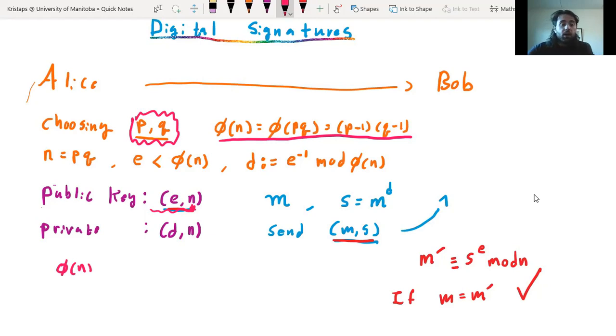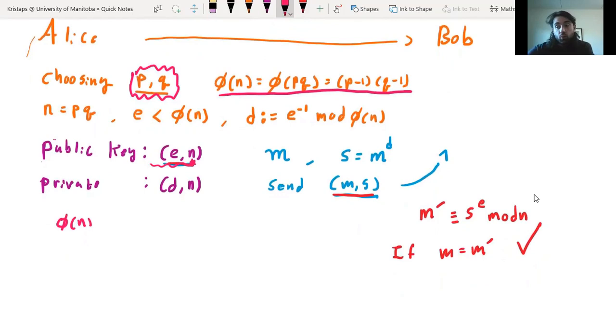So the one other problem or question you might have lingering from this is, well, how does Bob know? Why would this work out if Bob had the correct information? Well, let's look at this number S to the power of e. And remember, how did Alice actually compute S? Well, S was really M to the power of d. Right. So this is M to the power of d to the power of e, which is really just equal to M to the power of d times e. But remember that Alice chose d to be the multiplicative inverse of e modulo N. So that means that d times e is equal to one plus some multiple, we'll just call it K, of phi of N.